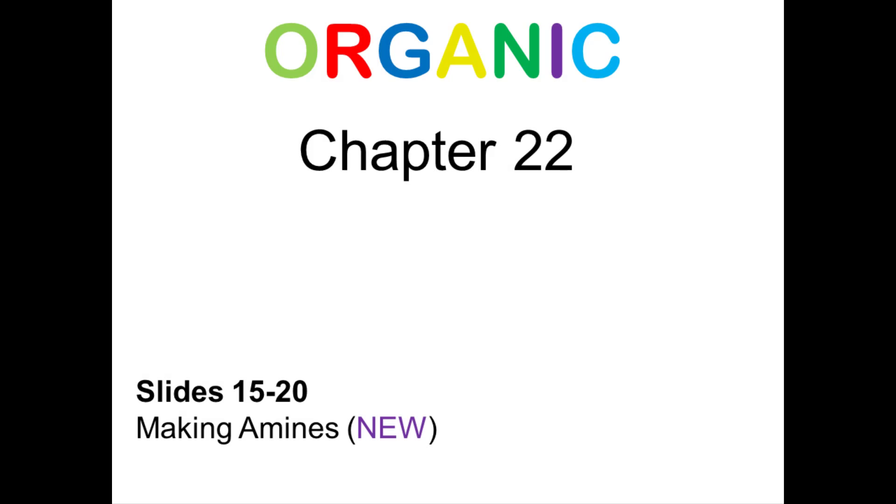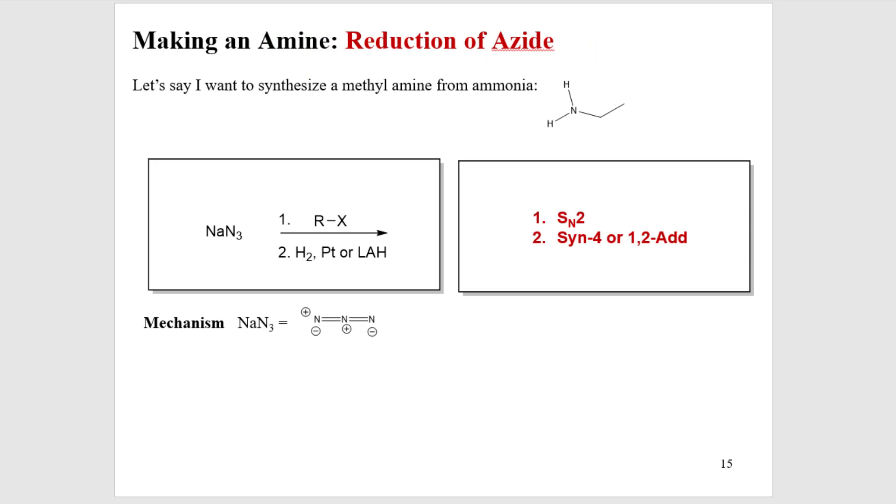Okay, this is the amines chapter, slides 15 to 20. We're still talking about how to make an amine customizable. How can we put just one, say, ethyl group on? Continuing with our goal of making, in this case, just an ethyl amine, a primary amine, we also can consider using an azide.